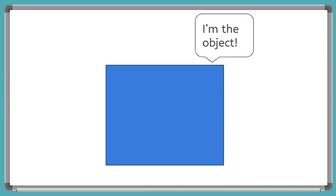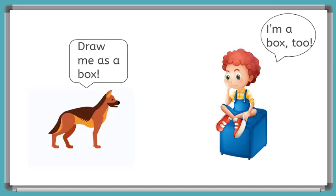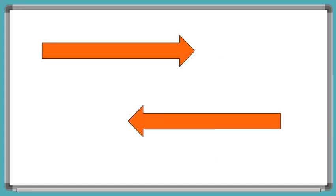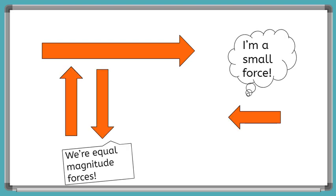When we draw free body diagrams, we represent the object as a box. Even if the object is a dog or a person, we still draw them as a box. And we use arrows to represent force. The arrow points in the direction the force is acting. And we use big arrows to represent bigger forces and smaller arrows to represent smaller forces.